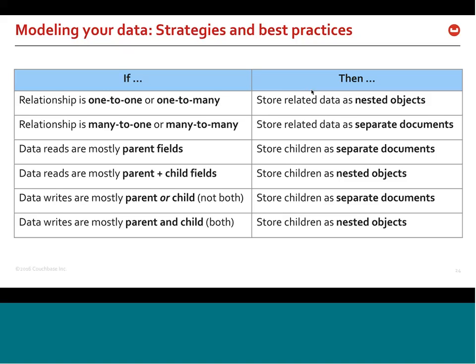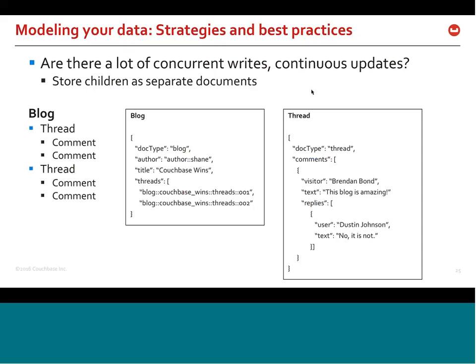For writes, think about whether you're writing just the parent or the parent and child together, and make the decision accordingly. A third dimension is concurrency and contention. If you have objects with many concurrent updates, you may want to express those children as separate objects so you can parallelize access rather than serializing through the parent. If an object is getting hundreds of thousands of updates per second, model it so you can break out the pieces being updated to avoid contending on the entire object.